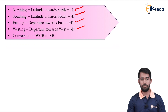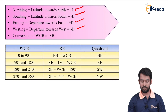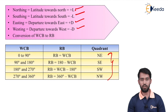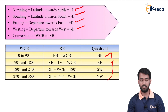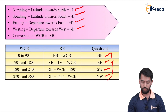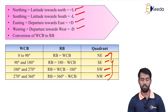Now, conversion of WCB to RB. While converting WCB to RB we use quadrants. If you know, we have to use the quadrants. North-east is the first quadrant, south-east is the second quadrant, south-west is the third quadrant, and north-west is the fourth quadrant. We use latitude and departure to identify the quadrants.